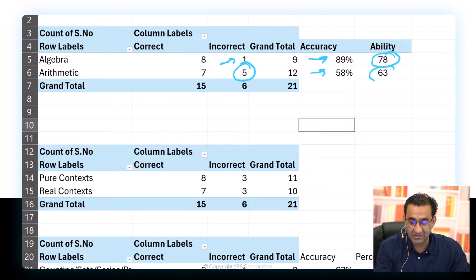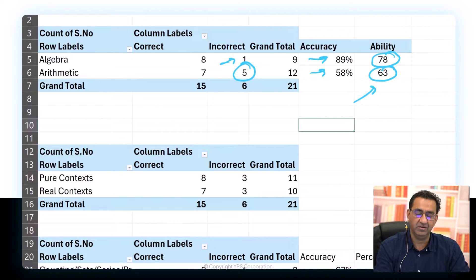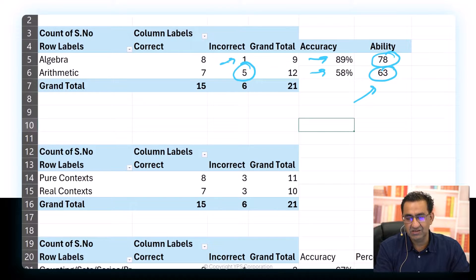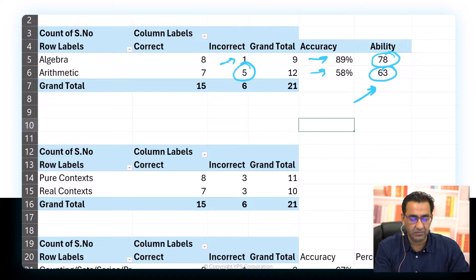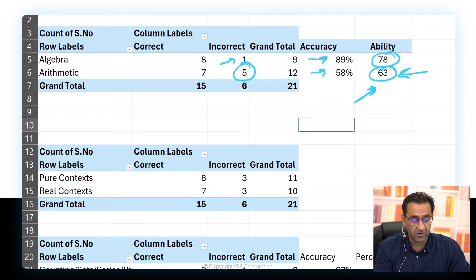Yet his estimated ability was 78th percentile in algebra and 63rd percentile in arithmetic. When your accuracy is higher than your ability estimate, it tells you the test did not serve as many difficult questions. The reason the test didn't serve harder questions is because mistakes in arithmetic limited exposure. So I would focus on arithmetic — that's what's limiting this student's score.